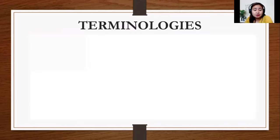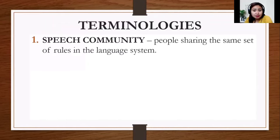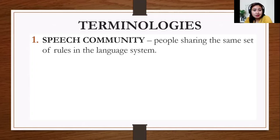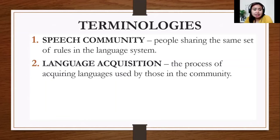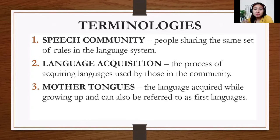Moving on, we have terminologies associated with learning and communication. We have speech community — people sharing the same set of rules in the language system. For example, if we're living here in Negros Occidental, we have the same speech community because we all speak Gainon. If you go to America, they belong in the same speech community because they speak English. We also have language acquisition — the process of acquiring language used by those in the community. While we are growing up unconsciously, we are learning language from our parents, relatives, friends, and playmates. And we have mother tongue — the first language you acquire while growing up, also referred to as the first language.